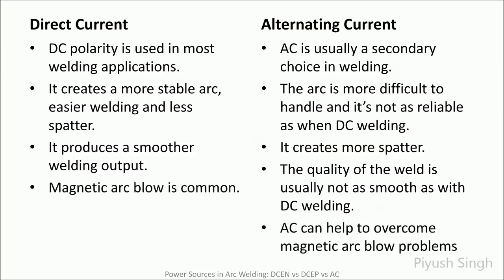Magnetic arc blow, also known as arc wander, is the arc deflection caused by distortion of the magnetic field produced by an electrical arc current. Arc blow can cause a number of welding problems including excessive spatter, incomplete fusion, porosity and lower weld quality. Magnetic arc blow is more common in DC welding than in AC welding.